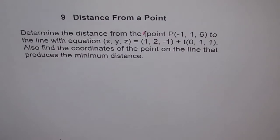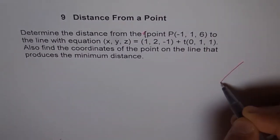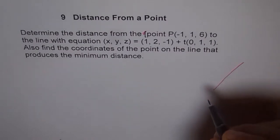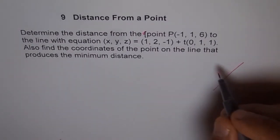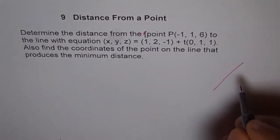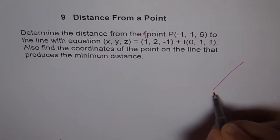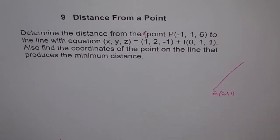Let's try to understand this problem. Let's say the given line is kind of like this — that's the line we are talking about, which has a direction vector M of 0, 1, 1. So that's the line given to us.